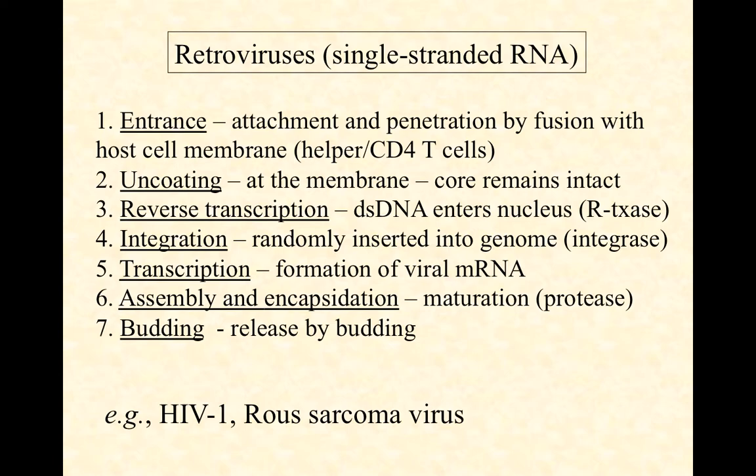That double-stranded DNA is imported into the cell nucleus, where it is randomly integrated into the host genome. An enzyme called integrase cuts the host cell genome — in this case the CD4 T-cell genome — inserts the double-stranded provirus, and ligates it back together. Now there is essentially a permanent, near-eternal supply of information to produce more HIV variants.